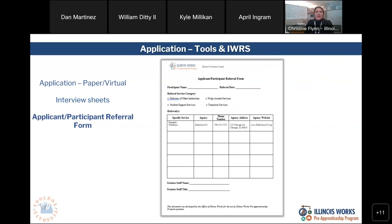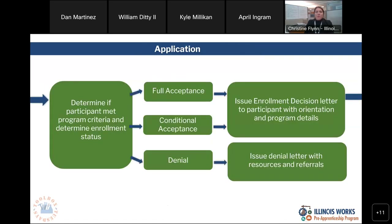So now we are continuing in our application stage. They've gone through the interview, and if they pass reaching that score of 32, we're going to determine that the participant has met program criteria and determine their enrollment status. There are three acceptance statuses. The first is full acceptance — they've met all eligibility requirements and we have documents verifying their high school diploma, Illinois residency, and age of 18 or above. The next is conditional acceptance, which usually means there's something we weren't able to verify — for example, they're working to get their high school transcripts, or they don't have proof of residency.